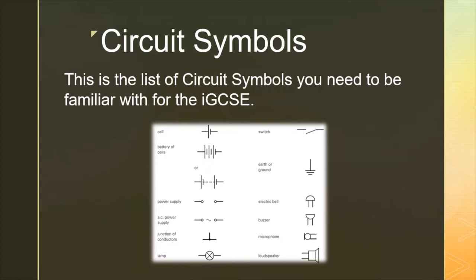Coming up to the top right-hand side, we have a switch, and then we have an earth wire or ground — I'm going to talk more about earth wires in another lesson. The last four don't need a huge amount of explanation in terms of their function, but I do want you to be able to recognize each of these symbols. The first one is an electric bell, the next one is a buzzer — not a huge difference between the two — then a microphone, and finally a loudspeaker.